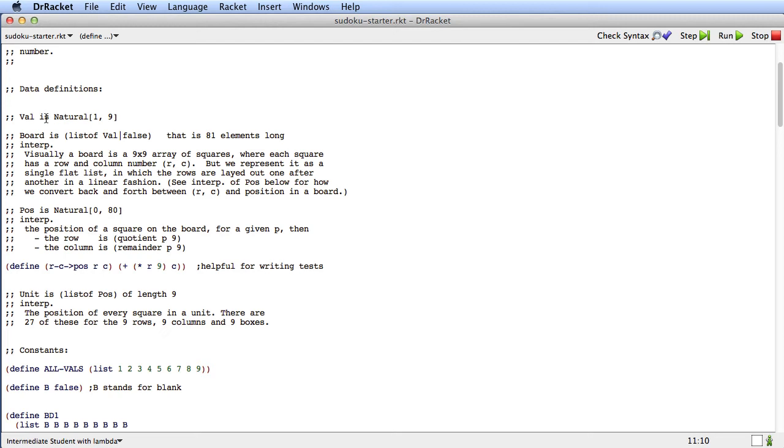Let's look at the data definitions. Well, the first thing we're saying here is that a val is a natural from 1 to 9. That's one of the values that we could put on the board.